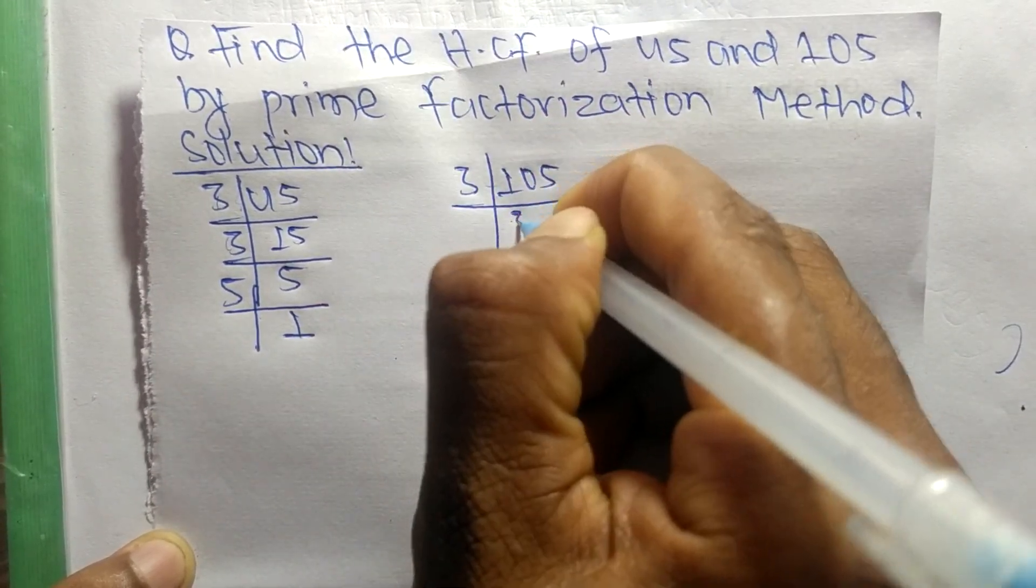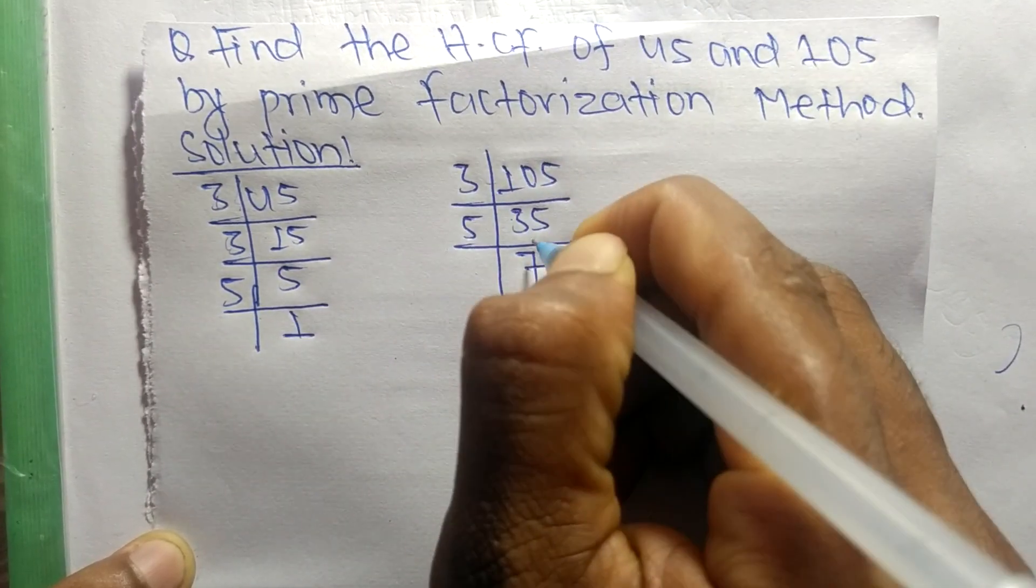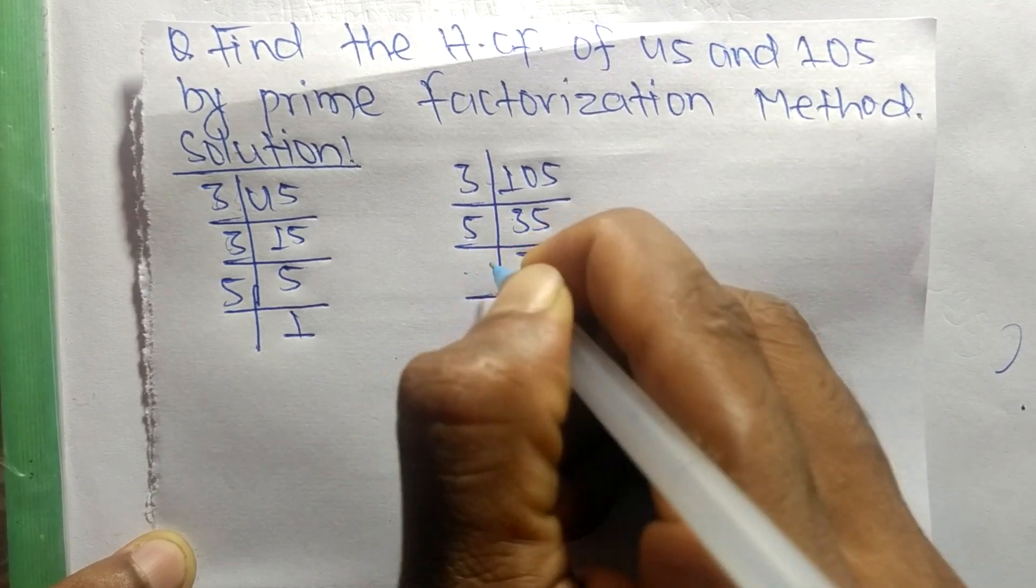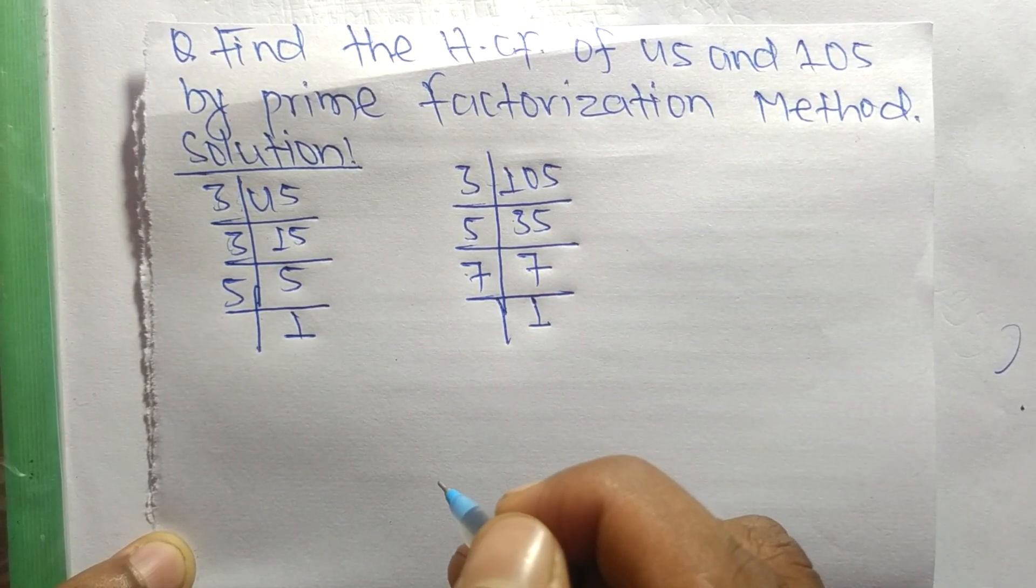3 times 35 equals 105, 5 times 7 equals 35, and 7 times 1 equals 7. Now from these prime factors...